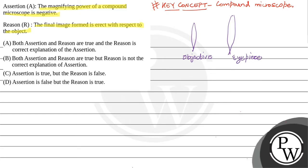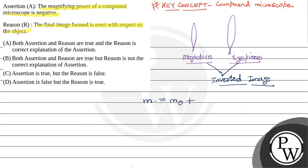Both the objective and the eyepiece form inverted images. The magnifying power of the compound microscope is given by the magnifying power of the objective multiplied by the magnifying power of the eyepiece.